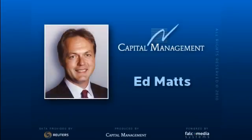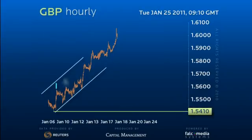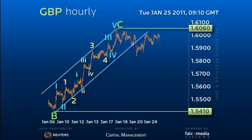Hello and welcome to the shorter term perspective on dollar sterling. When Cable spiked the 5 equals 1 target of 1.6045 it was right to sell, certainly in retrospect as it completed a trend sequence from the secondary 1.5410 low and therefore a 3 wave corrective rally.